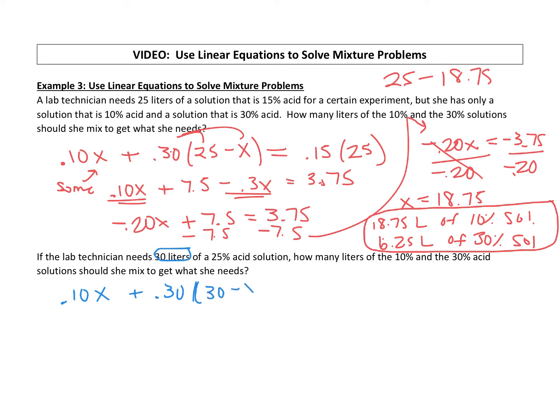And x is how much she used with her 10% solution. It's going to equal, she's looking for, always on the other side of the equal sign, she's looking for 30 liters of the 0.25 acid solution.